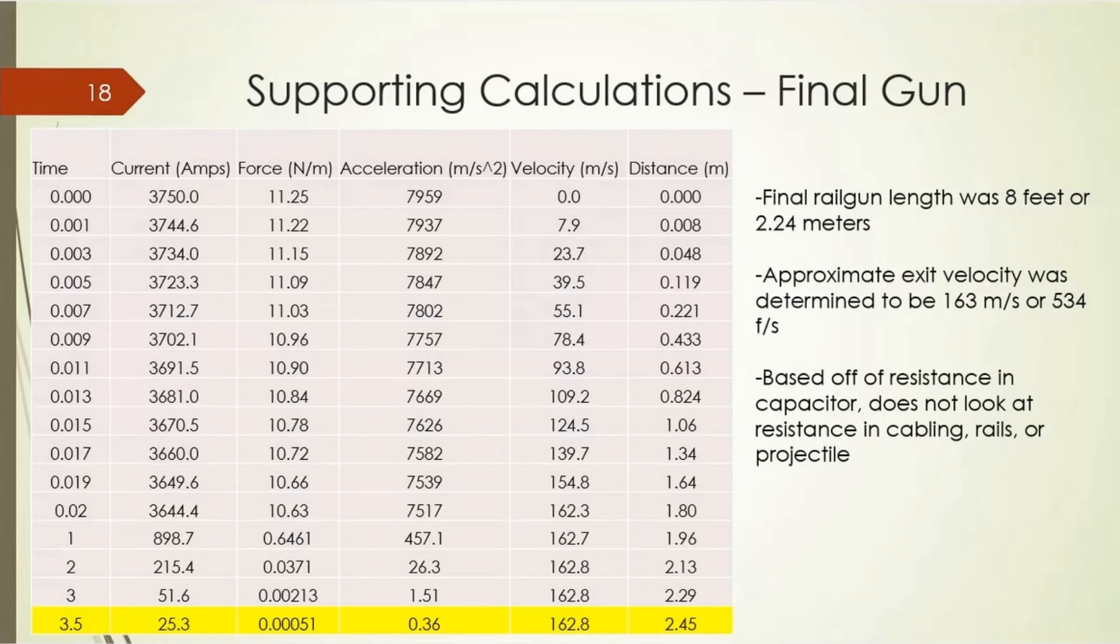After building my first prototype and evaluating that, I then did some more calculations for my final railgun to determine the exit velocity. With the 4 microhm internal resistance at 15 volts, the maximum current that the capacitor could possibly deliver to the projectile was 3,750 amps. This is a perfect situation ignoring the resistance of the projectile and the rails. It would take 3.5 milliseconds for the projectile to reach the end of the rails, 2.4 meters or 8 feet, and I would have a majority of the energy from the capacitor discharge into the projectile. So I was looking at 163 meters per second or 534 feet per second in an ideal situation.